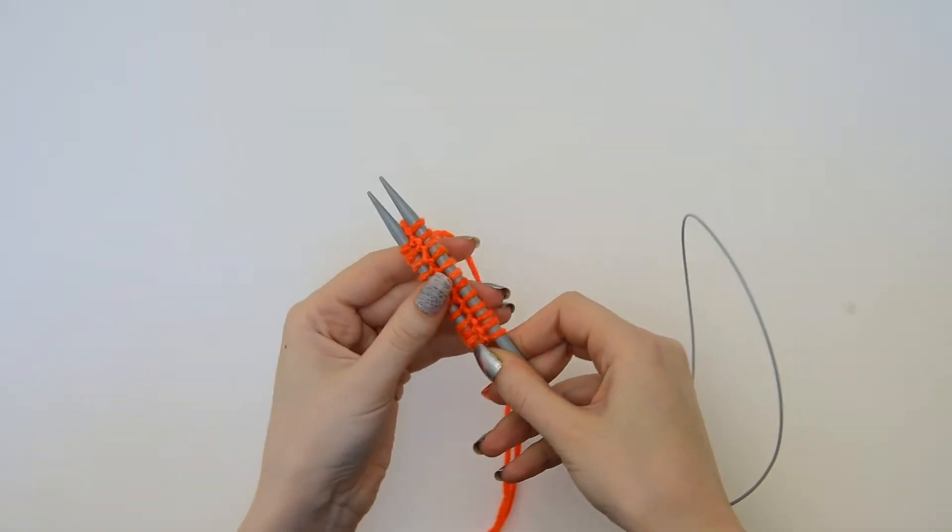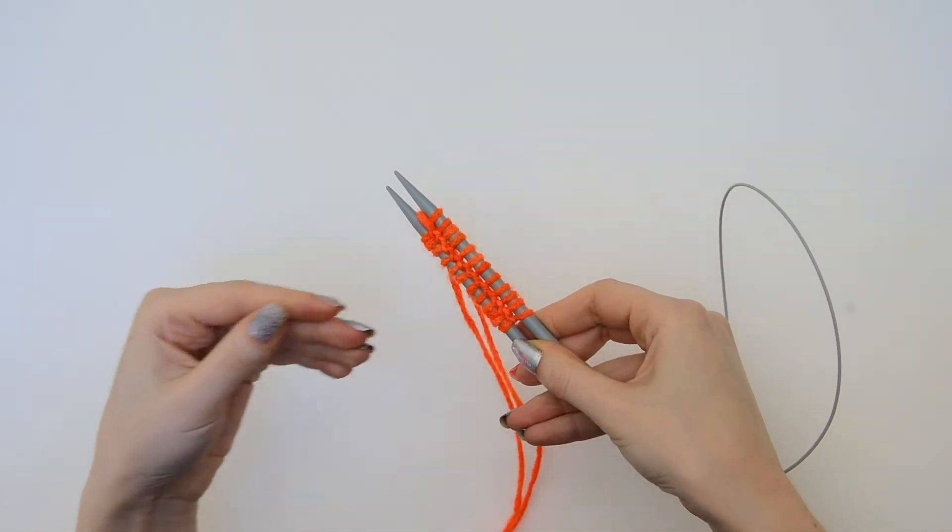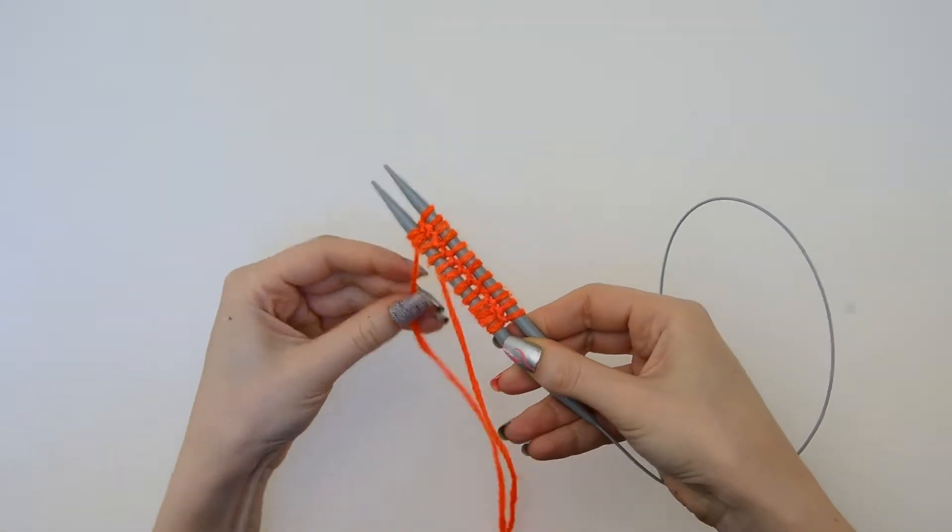And now you can begin to knit. What that does is create some nice ridge in the center of the pattern. So I'll show you what that looks like here.